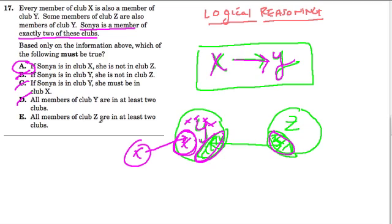Answer E: All members of Club Z are in at least two clubs. Well, we know that there is a group from Y and Z that are in two clubs, but we don't know if that's everybody in Group Z. So that one's out as well. And A is the only one that has to be true. Hope that helped.